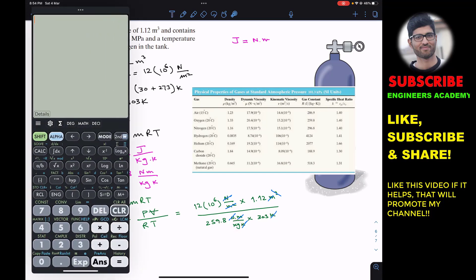Now let's multiply and divide all the constants. That is 12 into 10 raised to power 6 multiplied by 1.12 divided by 259.8 into 303. This gives us 170. The mass is 170.73.